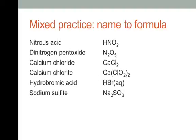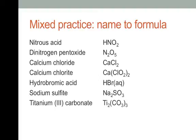Last one — titanium(III) carbonate: titanium is Ti, and the III means Ti3+. Carbonate is CO3 2−. To balance a 3+ with a 2−, find the least common multiple: 3+ × 2 = 6+, so you need two titaniums; 2− × 3 = 6−, so you need three carbonates. The formula is Ti2(CO3)3.